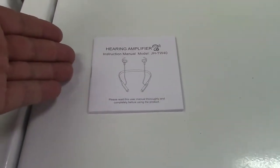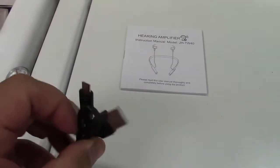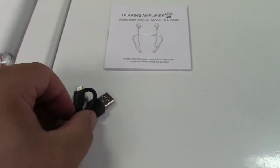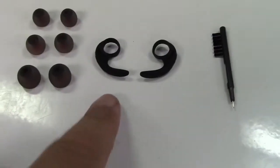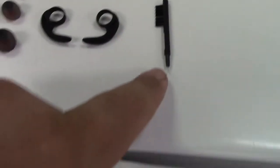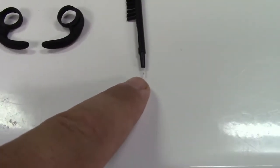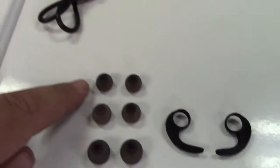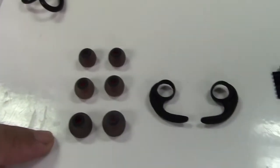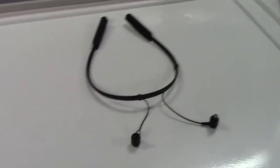In the box you get the instruction manual, charging cable, USB to micro USB. They give you a couple of ear hooks, a cleaning brush with a point at the end, three different size ear caps, and of course the unit itself.